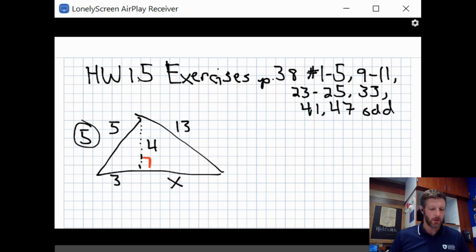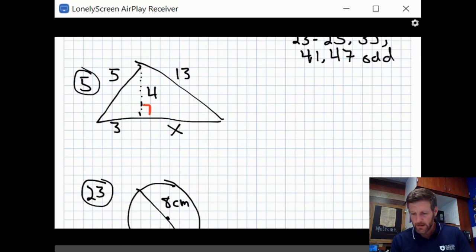Okay my friends, welcome to homework 1.5 exercises. We're going to be doing five problems together: 5, 23, 25, 33, and 41. You can see the full problem set up there. Sorry, written like a seven, five-year-old, but 1 through 5, 9 through 11, 23 through 25, 33, 41, 47 odd.